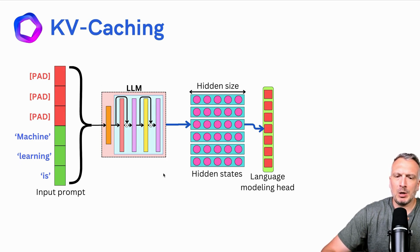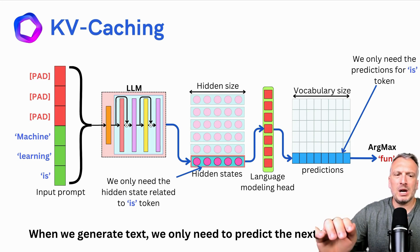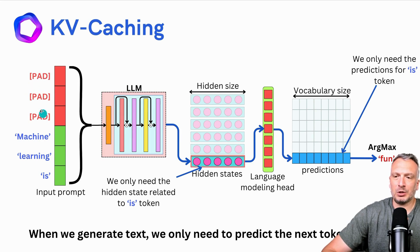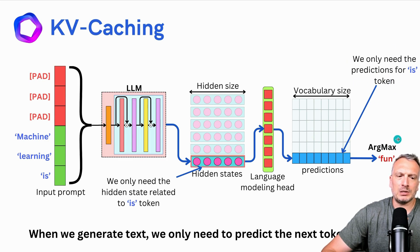The input prompt goes through the LLM. We have some hidden states that are generated by the LLM, and we have the language modeling head that is going to map the hidden states into predictions. If we are decoding some text, we are only using the prediction that relates to the last token in the input sequence. Here we have six different tokens — three of them are padding tokens. Out of the three last tokens, we are only using the prediction that relates to the last token, which is 'is'. Its corresponding prediction is this vector. If we were to decode in a greedy manner, the token decoded would be the word 'fun.' We only need the predictions for the 'is' token to generate the 'fun' token.